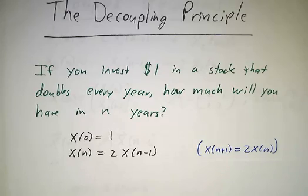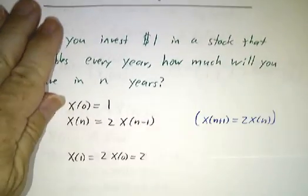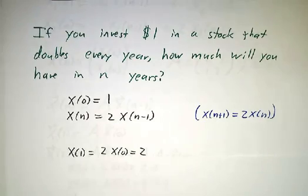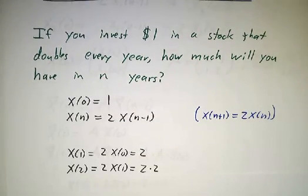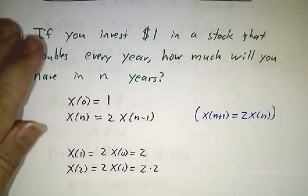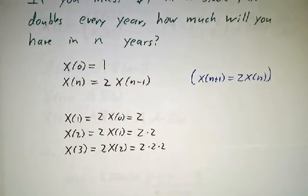Now we just go ahead and figure out. The amount that you have after one year is twice what you had to start with, so that's two dollars. The amount you have after two years is twice that, so that's 2 times 2 dollars. The amount that you have after three years is twice that, so that's 2 times 2 times 2 dollars.